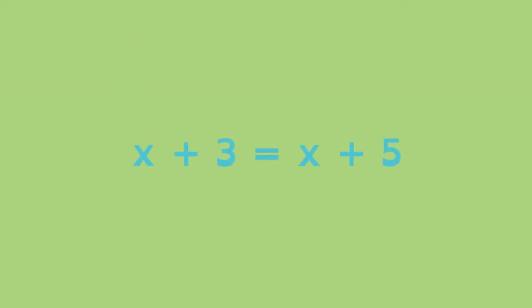Linear equations don't always have just one solution. In this equation, the solution has to be a value for x which when added to 3 gives the same answer as when added to 5. But the same number can't be added to 3 and 5 to make the statement true. This equation has no solution.